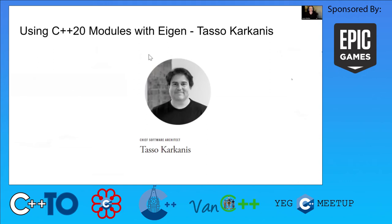The speaker is Tasso Karkanis, who will be presenting work he's been doing with C++20 around modules and Eigen. Tasso has over 20 years of experience designing and implementing 3D graphics software systems, mostly in C++. He currently serves as the chief architect at Augmenta AI, a Toronto-based startup focusing on bringing generative design to advanced manufacturing, architecture, engineering, and construction.